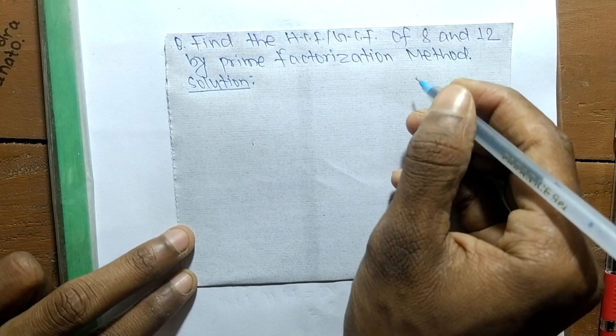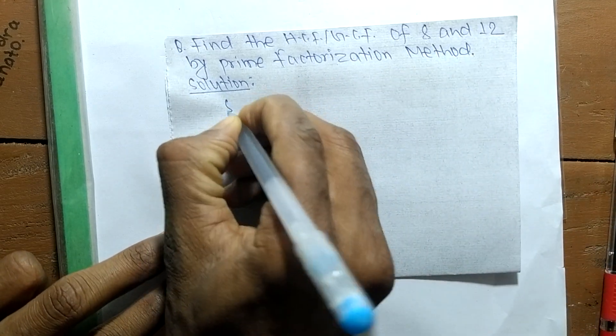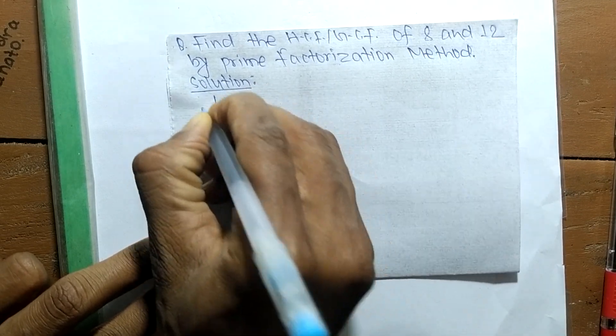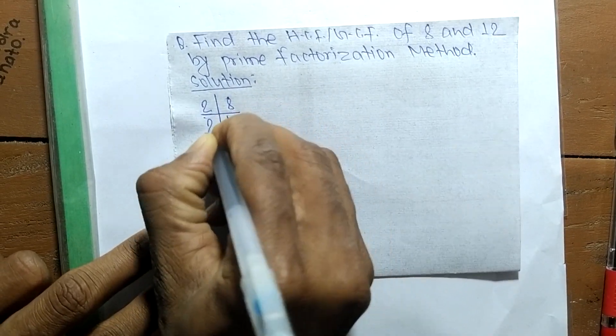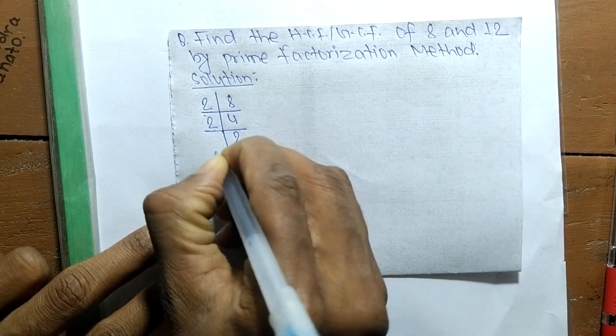First, we find the prime factors of 8. So it is 2 times 4 equals 8, then 2 times 2 equals 4, and 2 times 1 equals 2.